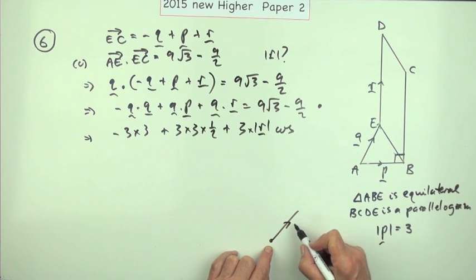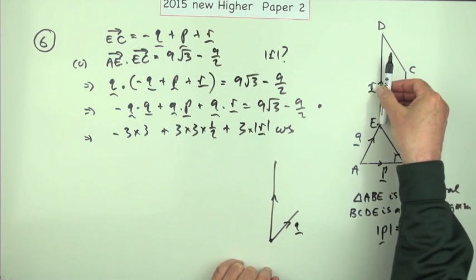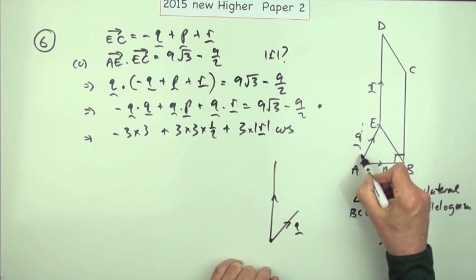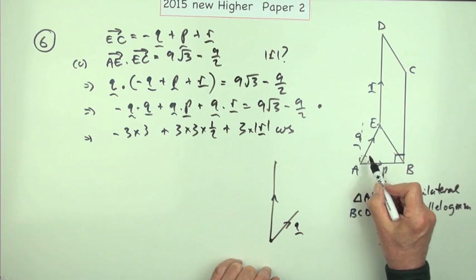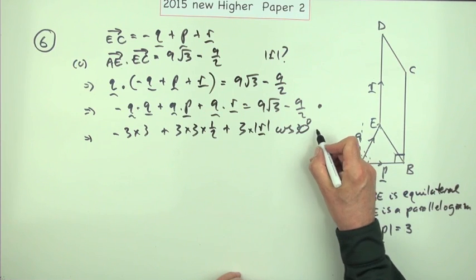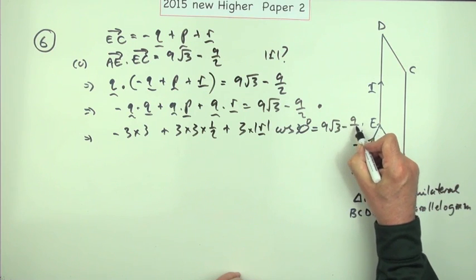The angle you use is the angle where they would both radiate from the same point, so that's q, an example of r would be here. That line is perpendicular to the base so that makes a nice little right angle here, so if that's 60, that's 30. And that should equal 9 root 3 minus 9 over 2.